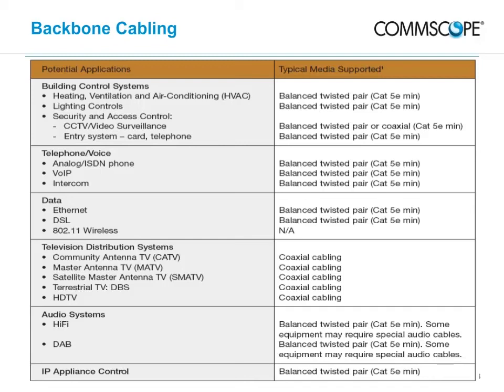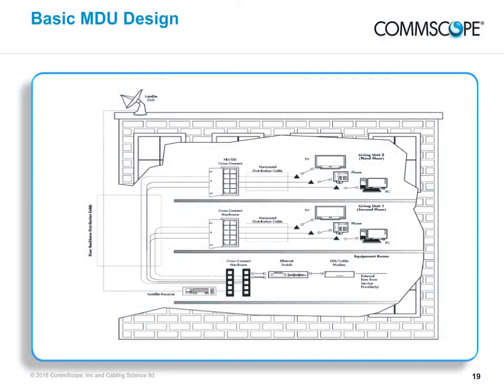Many of the applications listed in the table can be supported with CommScope solutions. The objective of designing a system is to determine what parts to order and help plan the installation by specifying where the components will be installed. To accomplish this, the homeowners or someone acting on their behalf must answer questions about what services will be present and how they will be used. Some of these questions are quite simple — for example, how many phone lines do you have? — but some require thought and planning. It is normally a three-step procedure which leads to a completely specified wiring system.